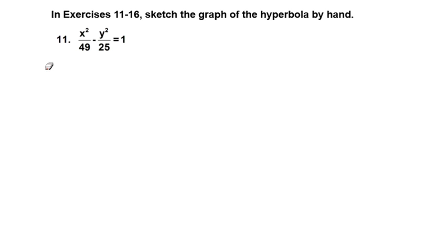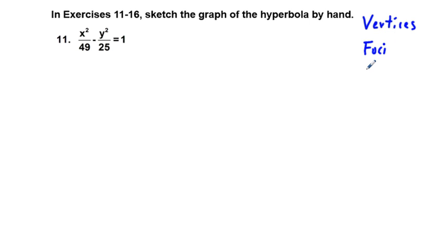In exercises 11 through 16, sketch the graph of the hyperbola by hand. To sketch, we're going to need to take advantage of three things: we're going to find the vertices, we're going to find the foci, and we're going to find the slant asymptotes. Finding the slant asymptotes is going to help guide us to the sketch of our hyperbola.